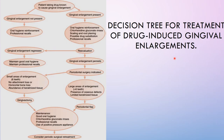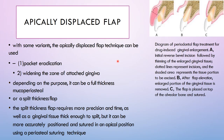Gingivoplasty can be accomplished with a periodontal knife, scalpel, or rotary coarse diamond stones, and creates a sluiceway for the passage of food. The procedure involves tapering the gingival margin, creating a scalloped marginal outline, thinning the attached gingiva, creating vertical gingival grooves, and shaping the interdental papilla. A decision tree for treatment of drug-induced gingival enlargement is included to clarify when gingivectomy versus periodontal flap is indicated.